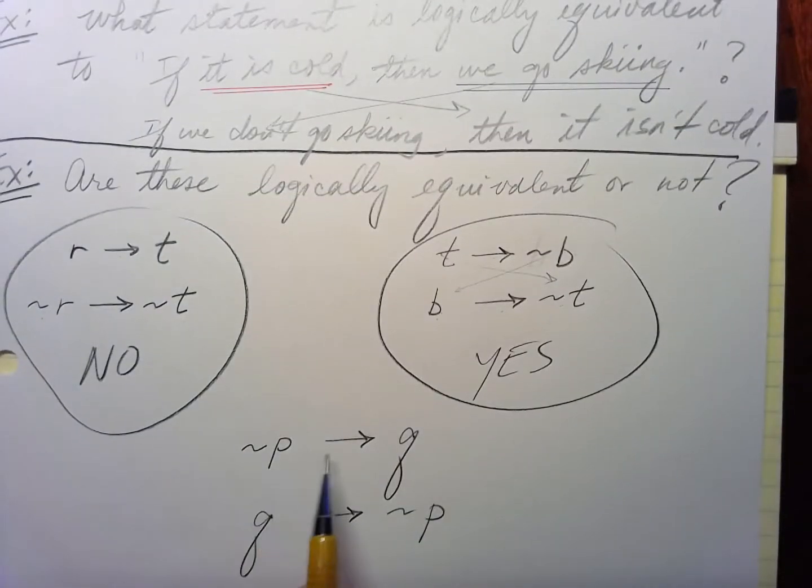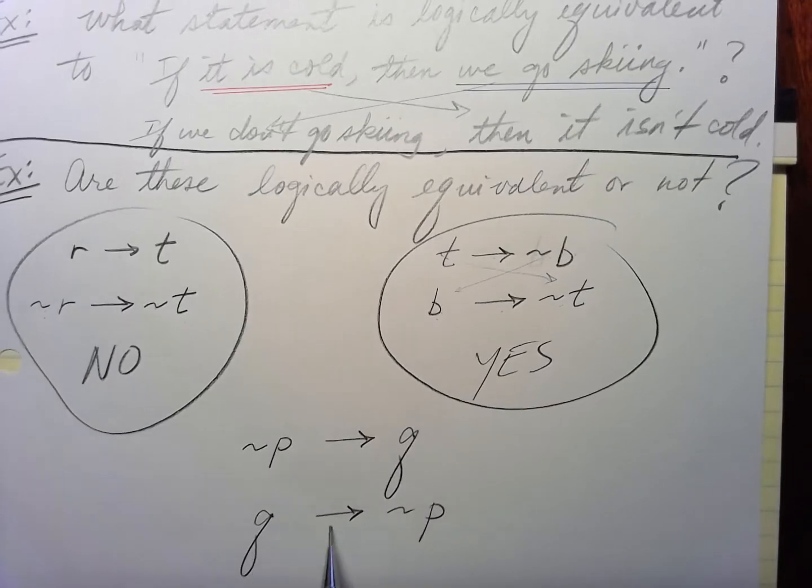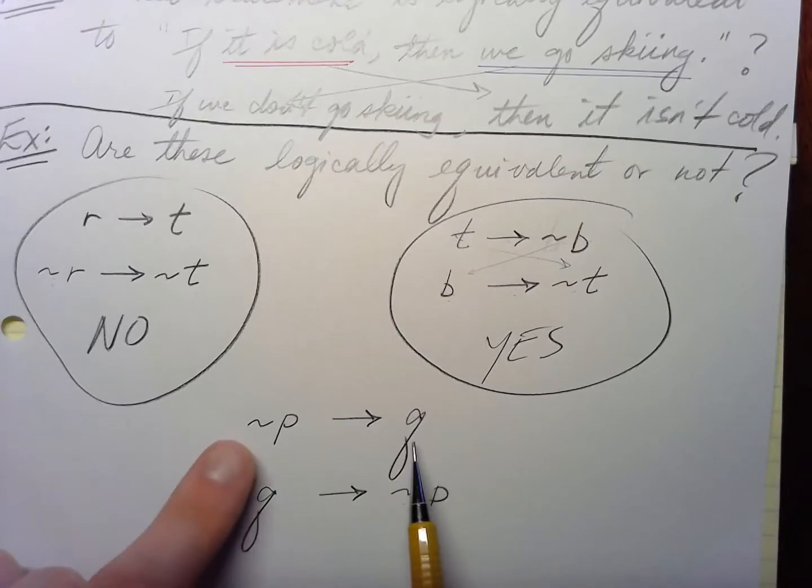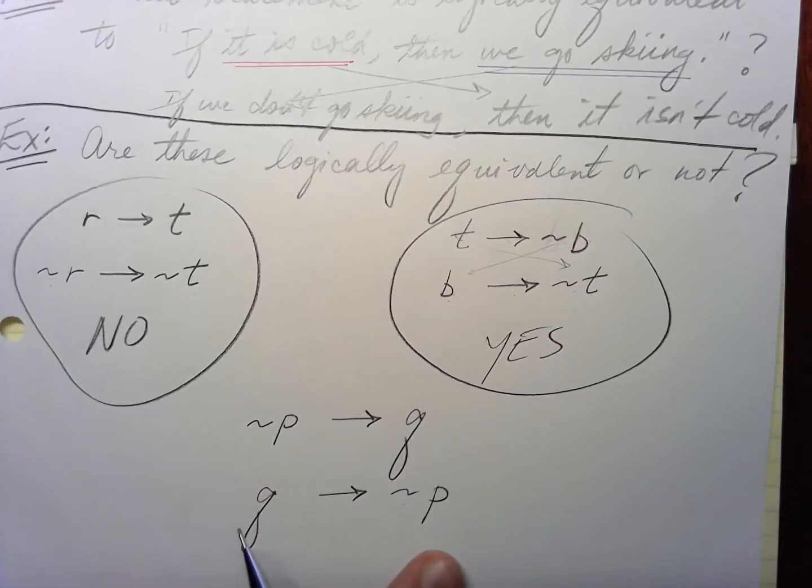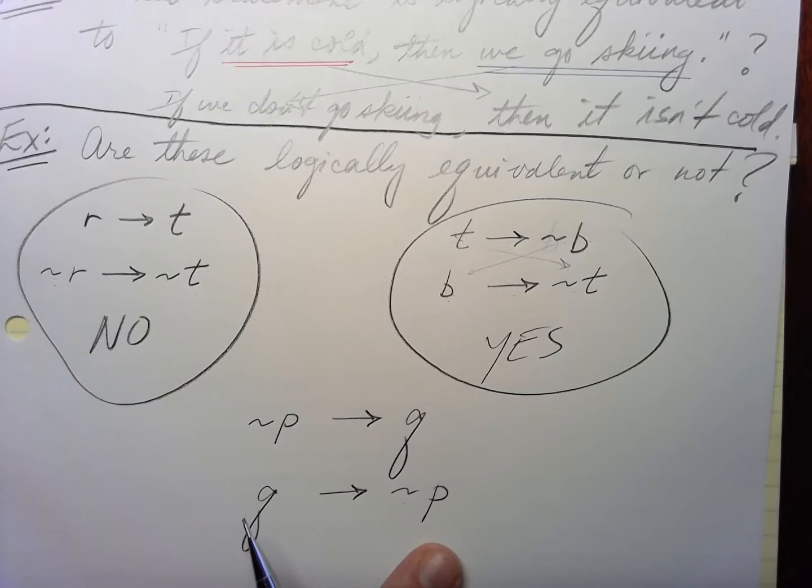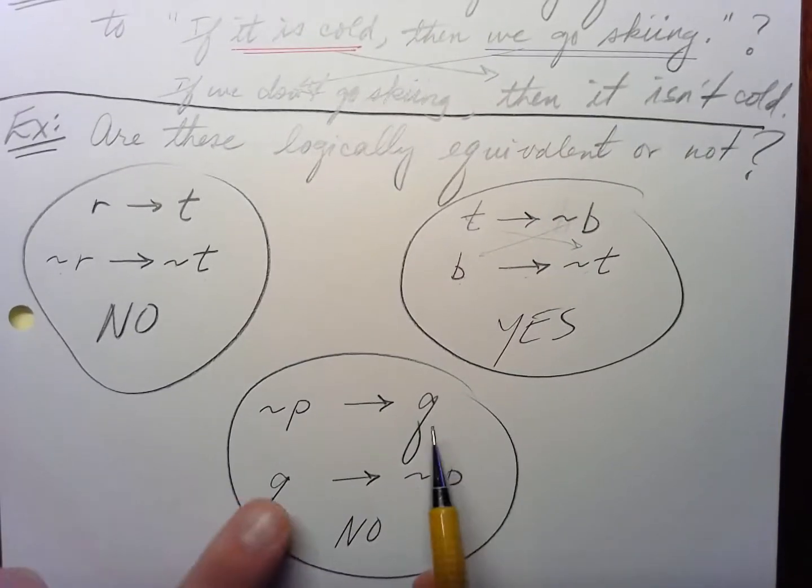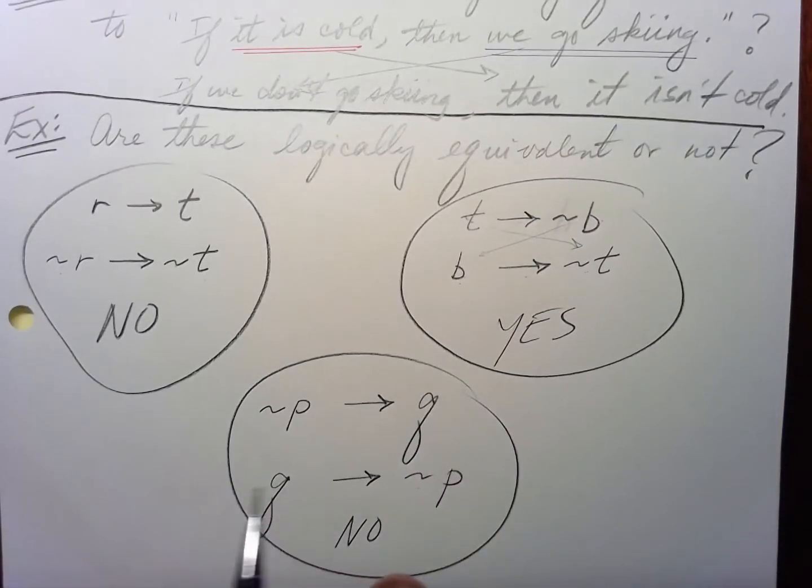Not P implies Q. And Q implies not P. Well, what we've done here, is we've just taken them and flipped them, but we haven't negated anything. So this is a no. Remember, for contrapositive, you have to flip and negate both.